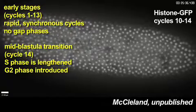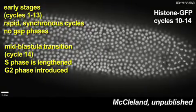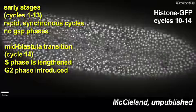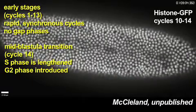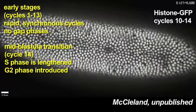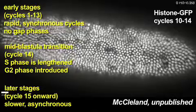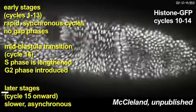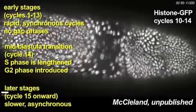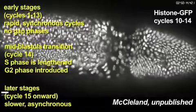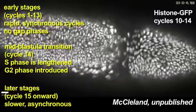At cycle 14, also referred to as the mid-blastula transition or MBT, S-phase is significantly lengthened and the first G2 phase is introduced. And unlike the rapid and synchronous cycles before the MBT, the cycles after the MBT are significantly slower and progress asynchronously.